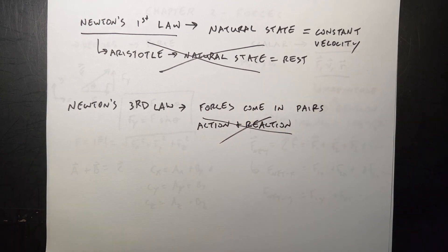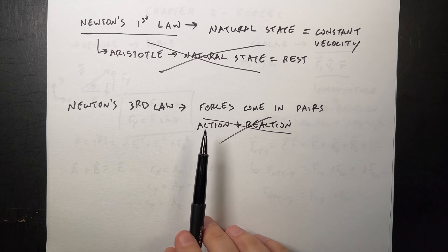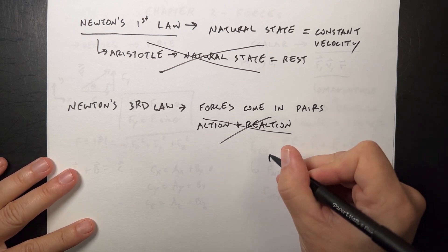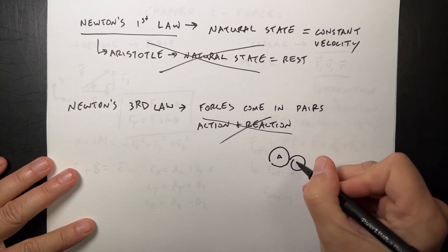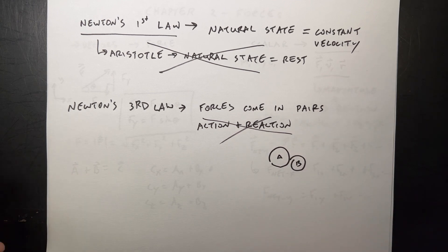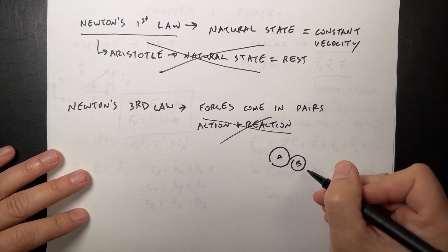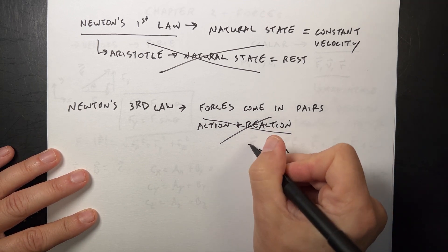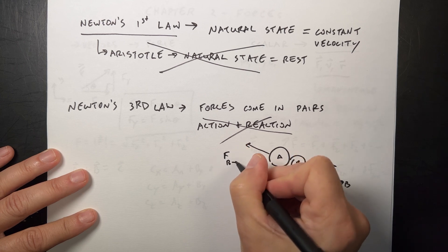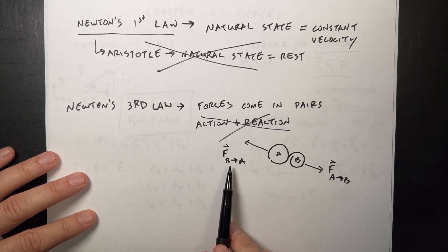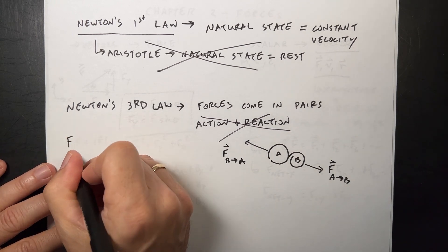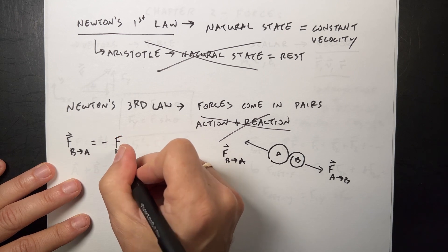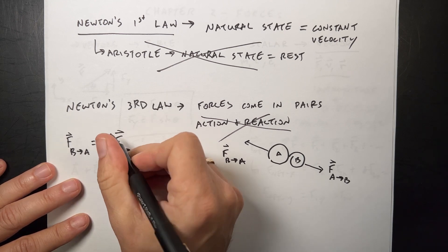What this really says is if I have two objects, call this object A and object B, and they're interacting in some way - it could be a gravitational interaction, a collision, doesn't matter - then I have two forces: the force that A exerts on B and the force that B exerts on A. This says the magnitude of this equals the magnitude of that, and the directions are opposite. So F B on A equals negative F A on B.